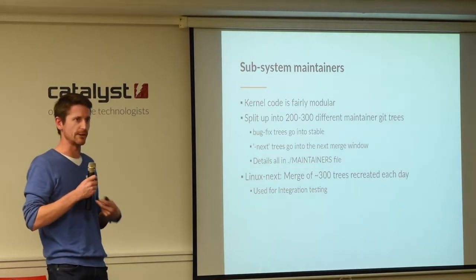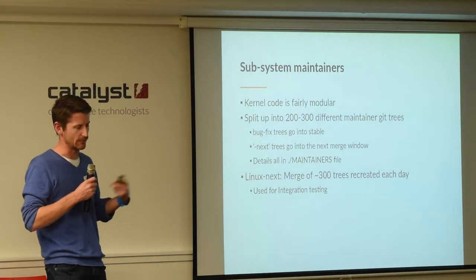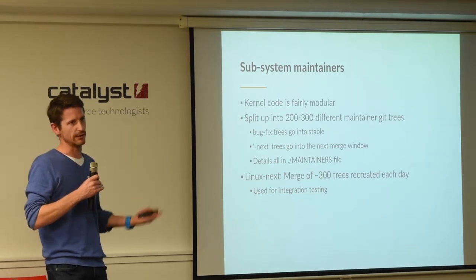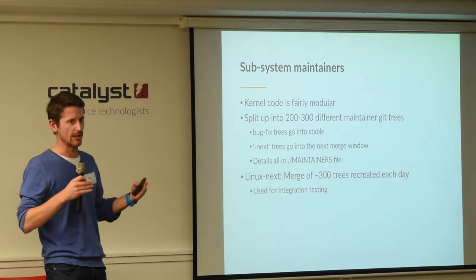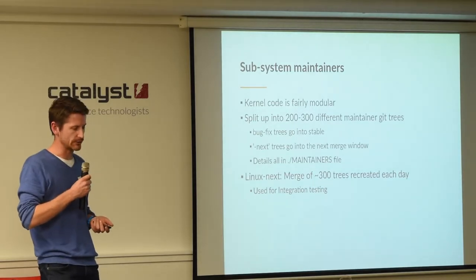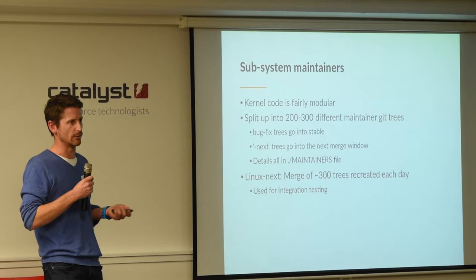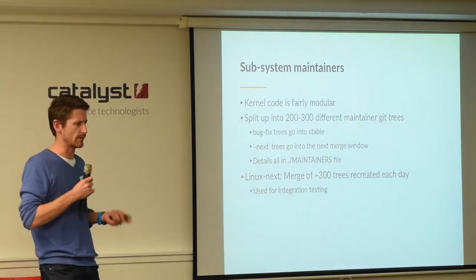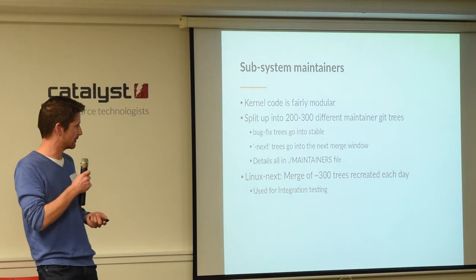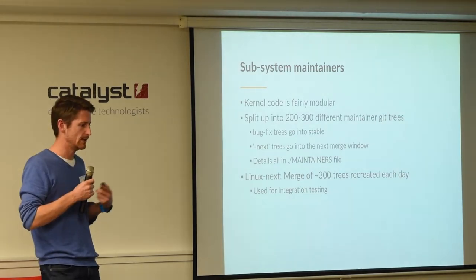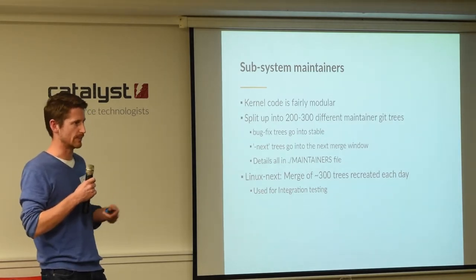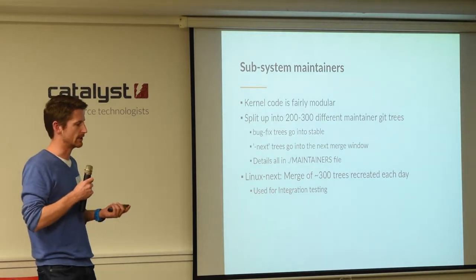When you send a patch upstream, you're not sending it directly to Linus. You're sending it to a subsystem maintainer, and they might send it on to another maintainer who looks after a larger subset of code, and eventually it makes its way into the master kernel branch. There are about 300 different kernel repos in use by the various maintainers — some have two, one for bug fixes going into the stable branch and one for new development. The details are in the kernel source code in a MAINTAINERS file that lists mailing lists and the git trees used.